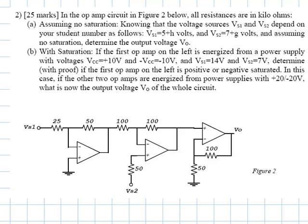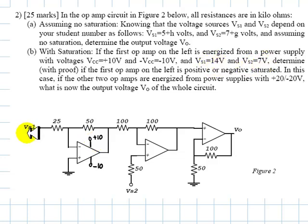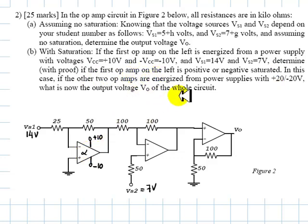Now we solve the second part of this exercise with saturation. If the first op-amp on the left is energized from a power supply with voltages plus 10 and negative 10 volts, and VS1 is 14 volts and VS2 is 7 volts, determine with proof if that first op-amp on the left is either positive or negative saturated.